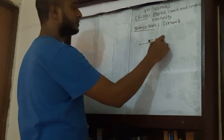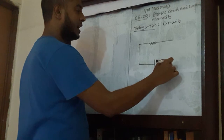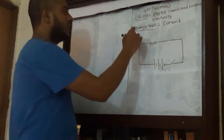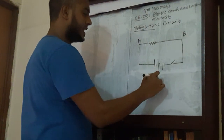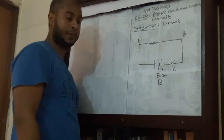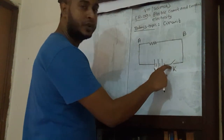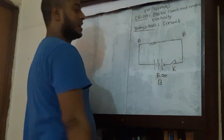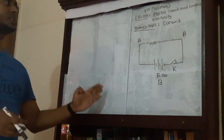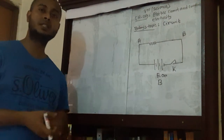Here we have a resistance, connecting wires, an electrical cell, and a key or switch. Point A and point B — the electrical cell is the electromotive force, or battery, or cell; B is the battery terminal, and K is the switch. This is a complete path — but wait, is it a complete path? No, this is not a complete path because this is a disconnected switch. If I connect this switch, then this becomes a complete path. Since this is a complete path of electricity, this path is called a circuit.